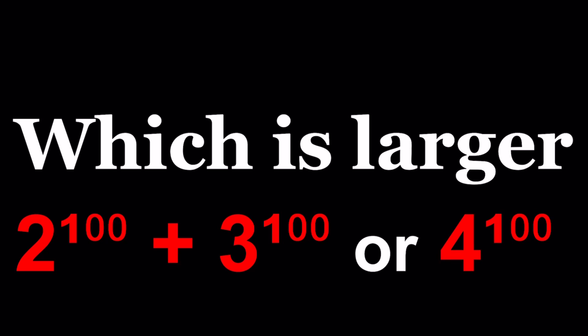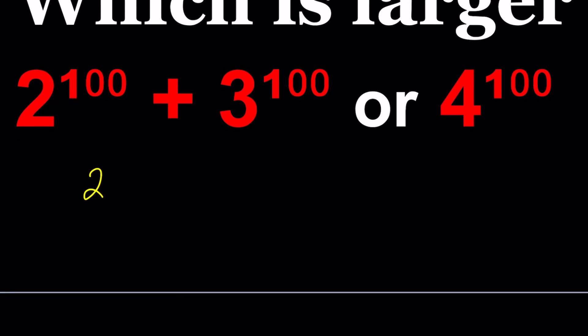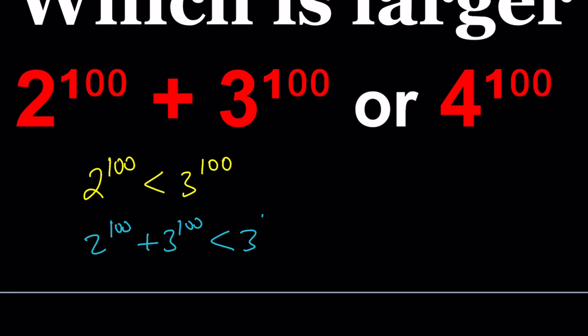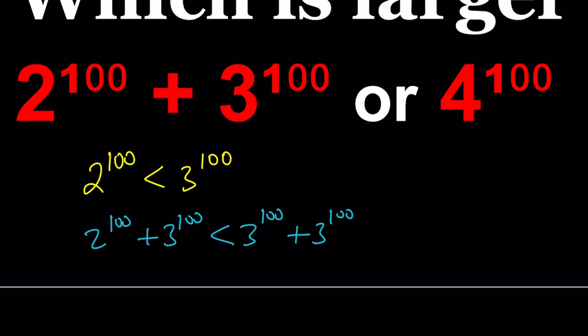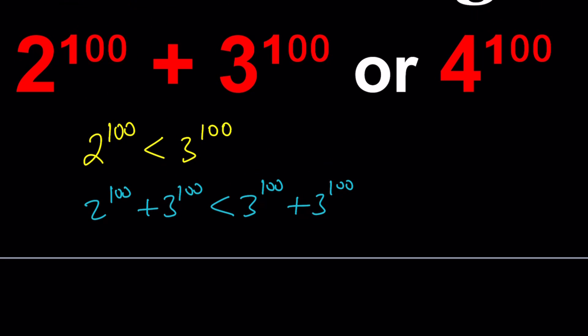Let's start with what's on the left hand side. 2 to the power 100 is less than 3 to the power 100, because the base 2 is smaller. So first we establish that. Now I'm going to be adding 3 to the power 100 to both sides so that we can get the expression on the left. So we have 2 to the power 100 plus 3 to the power 100 less than 3 to the power 100 plus itself. And now we have what is on the left hand side.